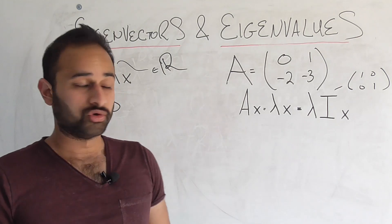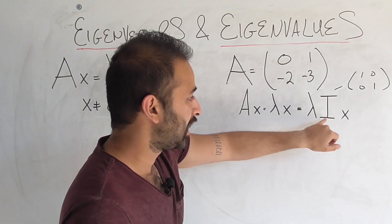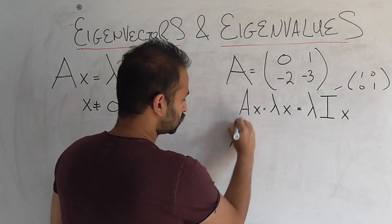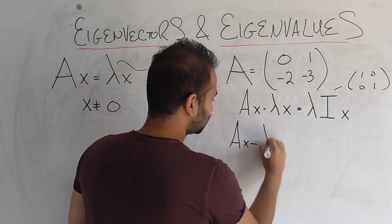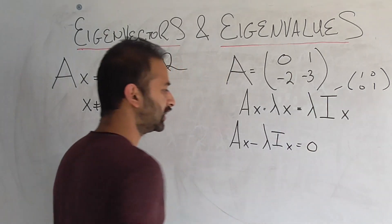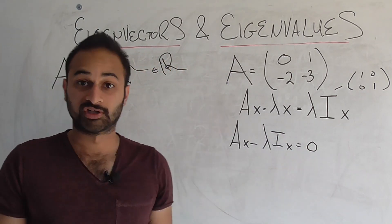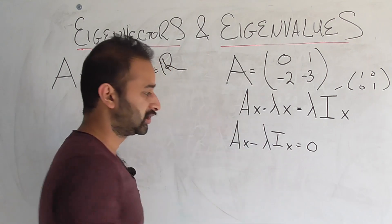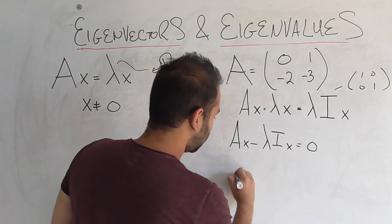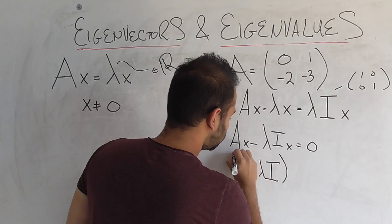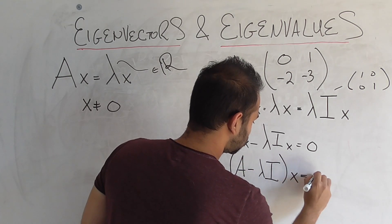Now what we're going to do is subtract lambda identity matrix x from the right hand side and the left hand side. So we get Ax minus lambda identity matrix x is equal to 0. We like in math when we have things equal to 0 because they help us a lot. We see we have an x here and an x here. Let's factor the x out. So we get A minus lambda identity matrix times x is equal to 0.